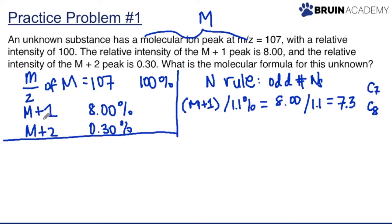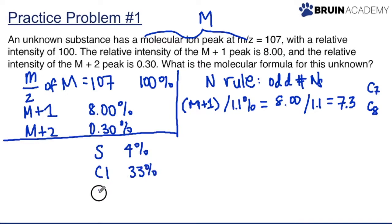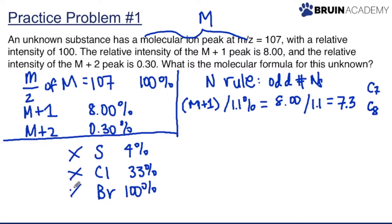Next we need to know whether we have chlorine, sulfur, or bromine present. That's what M+2 tells us. The M+2 relative intensity is 0.3%. For S we need ~4%, for chlorine ~33%, and for bromine ~100%. So 0.3% doesn't match any of these, meaning none of these elements are present in our molecular formula.